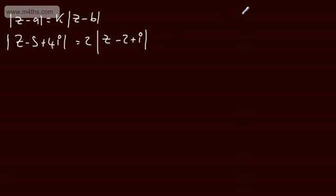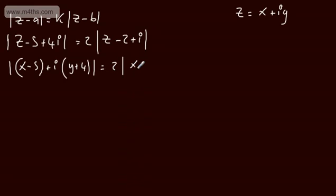If we go back to our understanding of z, we know that this is equal to x plus iy. I'm going to convert this now to Cartesian form. So rewriting the moduli, collecting the real parts, x minus 5 plus i the quantity y plus 4, and then that's going to be equal to 2 lots of the modulus of x minus 2 plus i the quantity y plus 1.